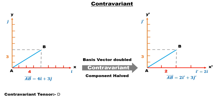Displacement, velocity, and acceleration are all contravariant vectors. If the basis of any of these is doubled, then its components are half. But keep in mind that only the component will be half — the vector will remain the same. Now let's talk about covariant. Let's understand it with gradient.